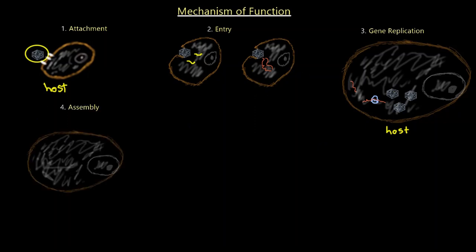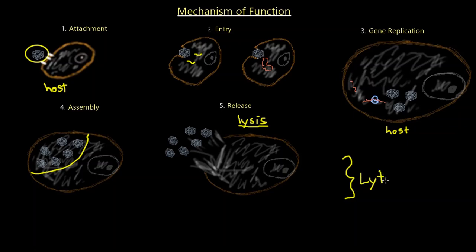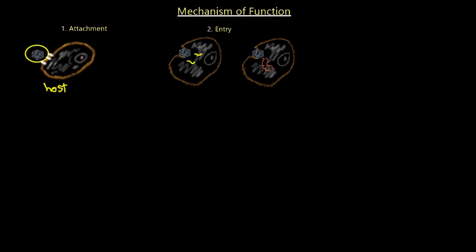The next stage is assembly: once many viruses are reproduced, they assemble on the host cell. After assembly, the final stage is release — the viruses are released into the extracellular fluid, bursting the cell. This release is called lysis, and the entire cycle is called the lytic cycle of viral mechanism of function.